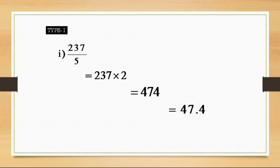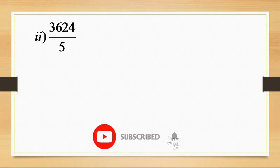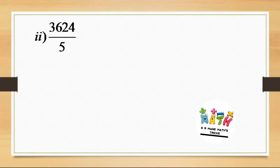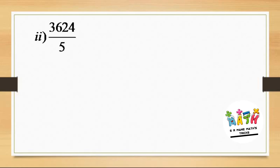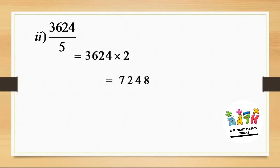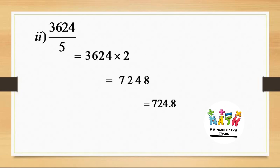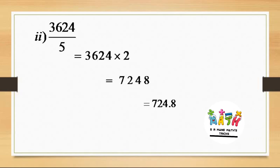For the second example, we take a four-digit number: 3624 divided by 5. We multiply 3624 by 2 to get 7248. Then, simply taking the decimal one digit from the right, we get 724.8 as the answer.